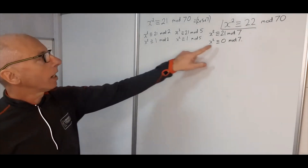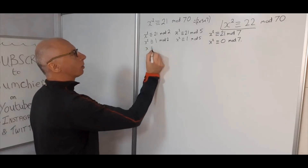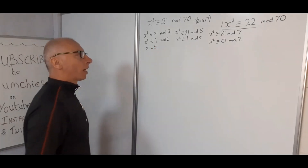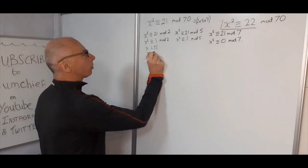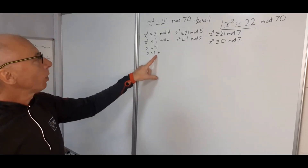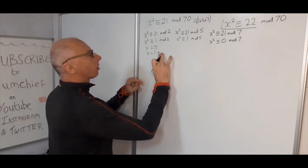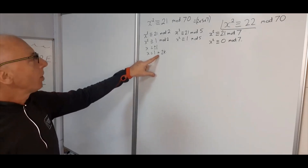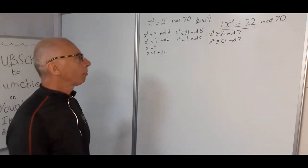Since we can take square roots directly here, x squared equals 1 gives plus or minus 1. For mod 2, minus 1 mod 2 is 1, so the solution is x equals 1 plus 2k for any integer k. For example, x equals 3: 3 squared is 9, and 9 is congruent with 1 mod 2, which confirms this works.